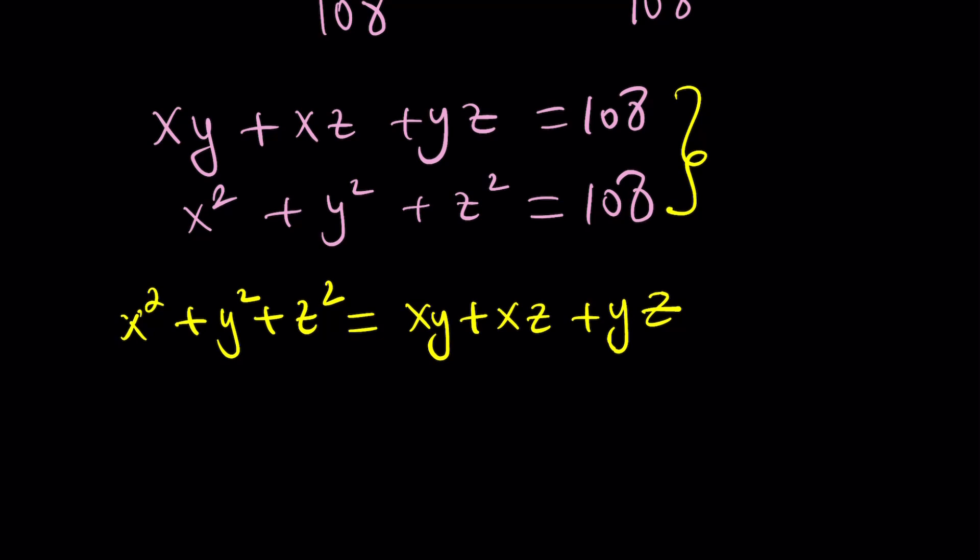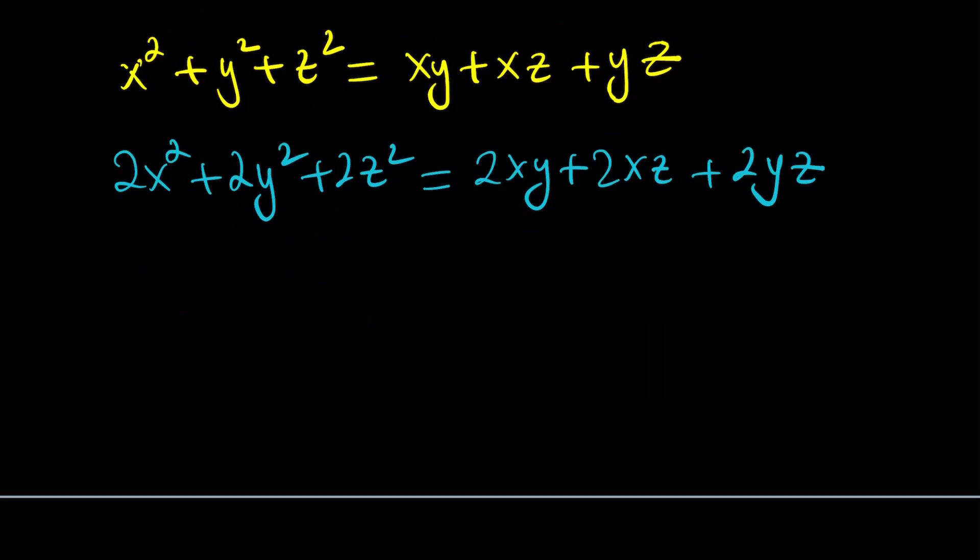And what does this mean? Well, we're going to multiply both sides by two first. My goal is to put everything on the same side and complete the squares. And when I do, something mathematical is going to happen. Mathemagical.